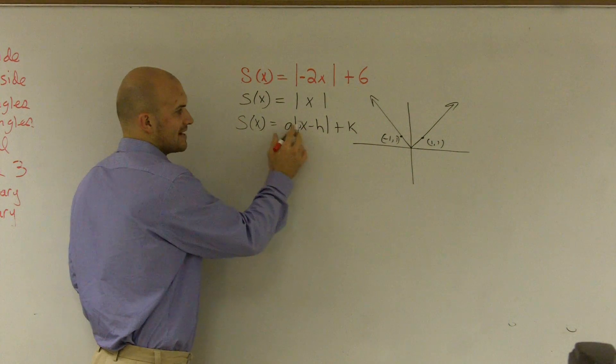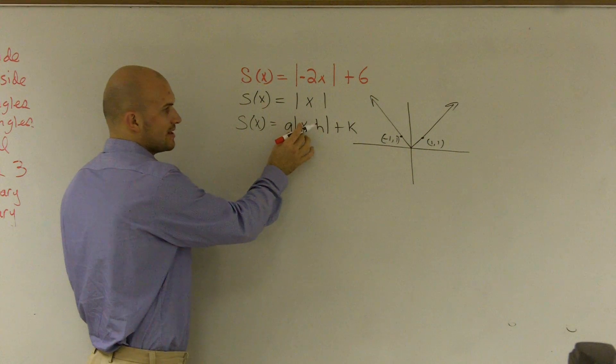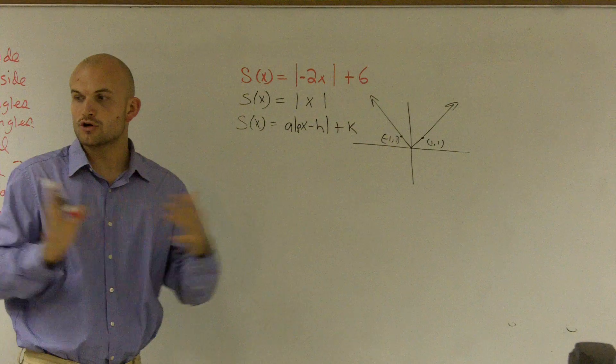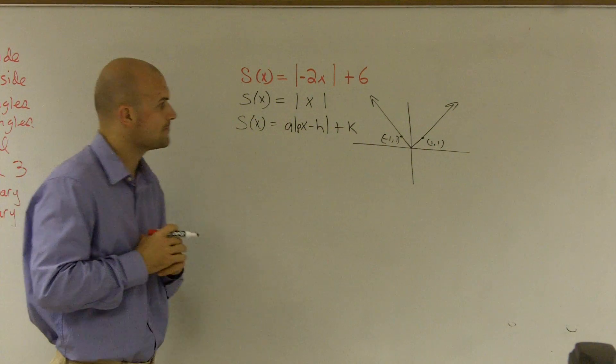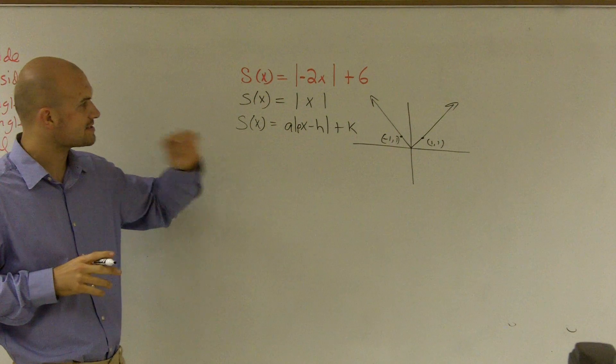And then we have a coefficient of x or you can have your a outside of there. And what these do is if you're going to be shrinking or compressing or stretching your absolute value function. And also your a tells you if it's opening upwards or opening down. So that's something else that's in a different video. But I want to look at this.